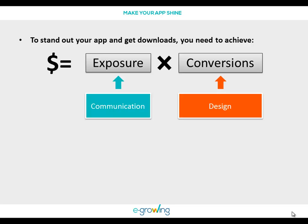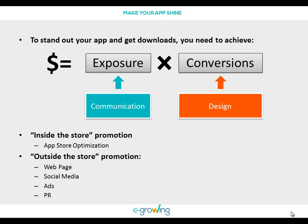You can only get exposure and conversions if you invest in promoting your app. One way of promoting your app is by doing app store optimization. That means improving your app name, app icon, app screenshots, app description, app reviews, and app keywords. You can also promote your app outside the store with a web page, social media strategy, advertising, or PR campaigns.